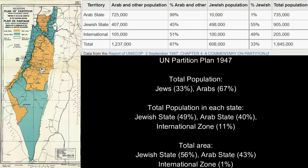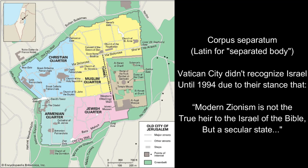Even in the so-called Jewish state, Jews only barely made up a majority. In the Arab part it was 99% Arab, but the Arabs — who made up 67% of the population of mandatory Palestine — would only be given 43% of the land. The remainder was going to be an international zone, which is where Jerusalem was, a proposal mainly pushed for by the Vatican and other religious organizations who wanted it administered internationally.